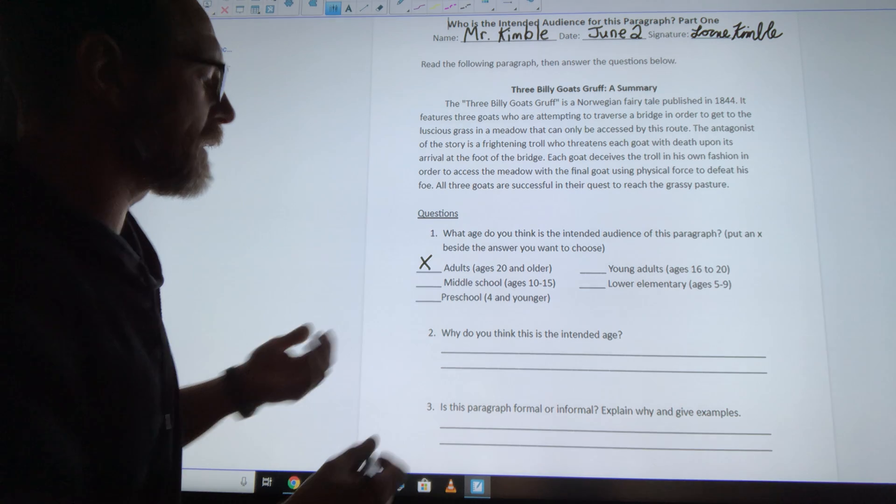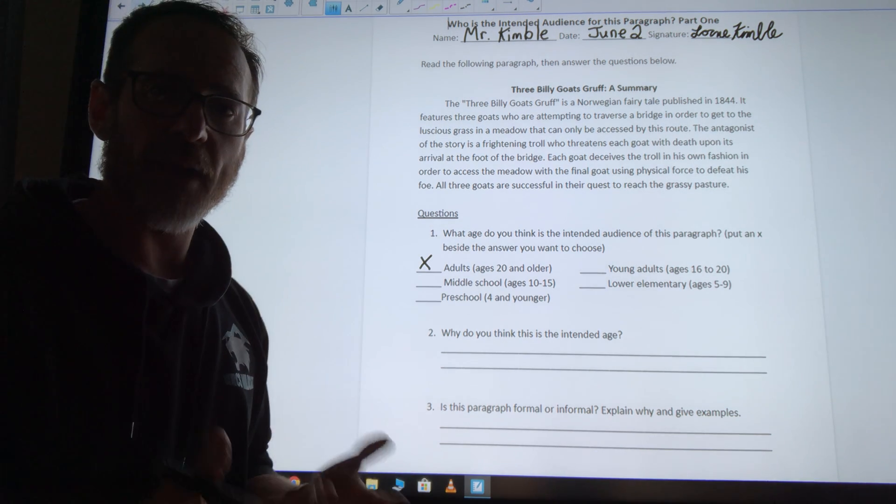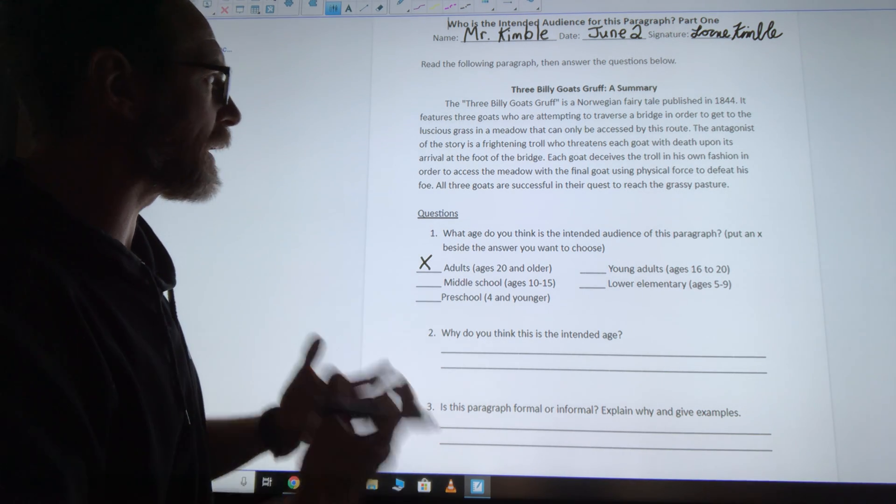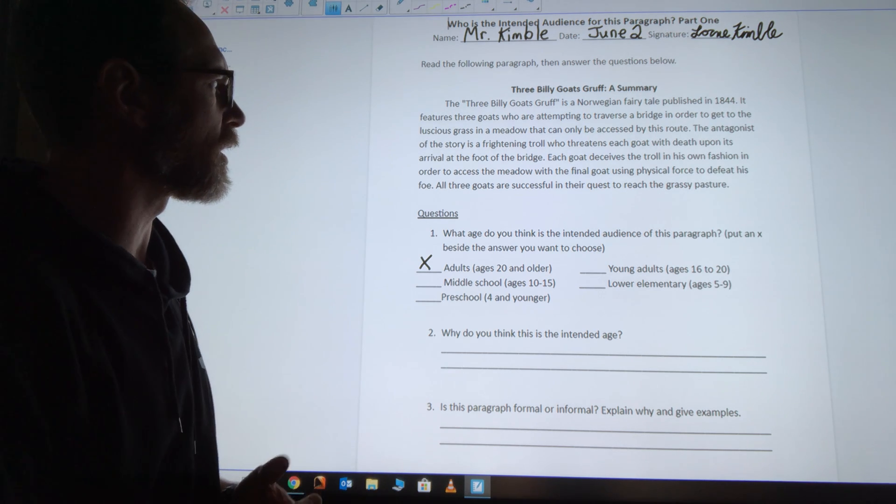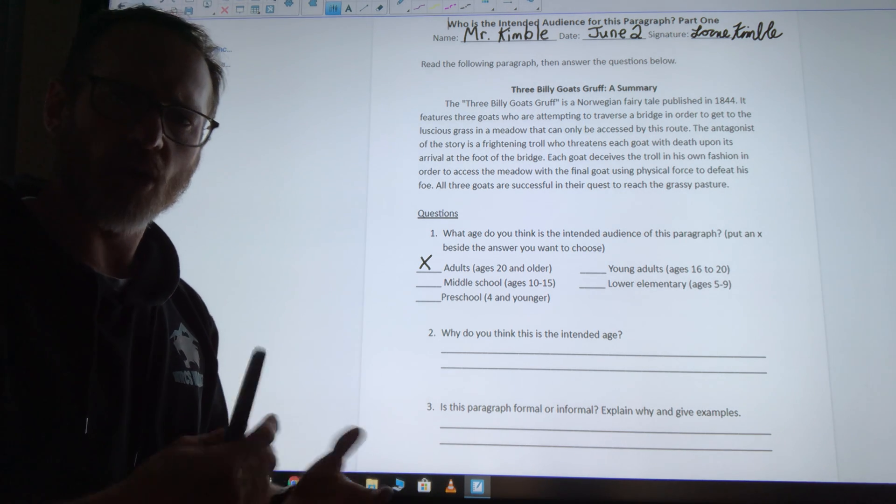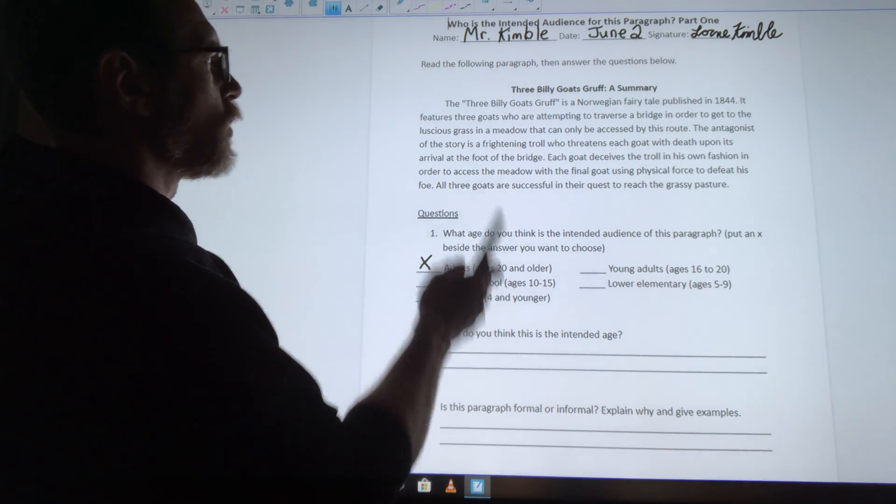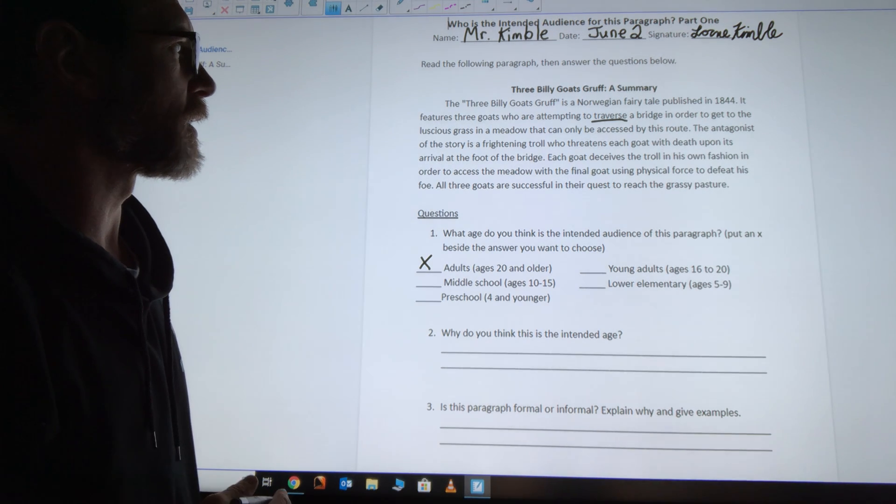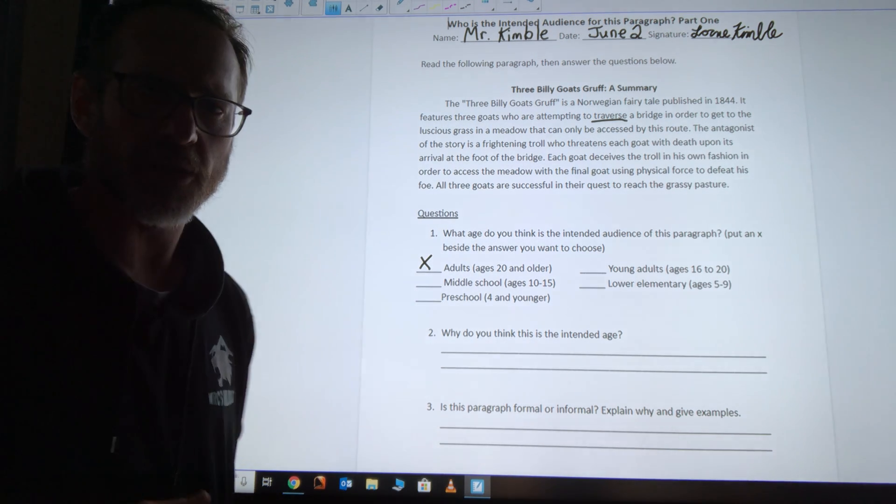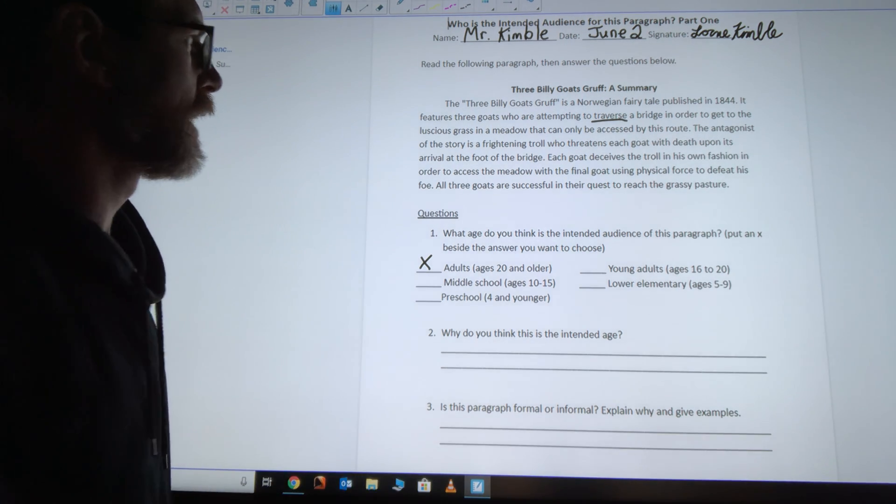The reason I think that is because it uses some very big words, words that you might not hear or might not know until you're a bit older. If you look at words like traverse, the author is saying that they're going to traverse the bridge. That means go across.